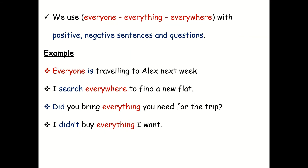And we use everyone, everything, everywhere with positive and negative sentences and questions. Example: Everyone is travelling to Alex next week. I searched everywhere to find a new flat. Did you bring everything you need for the trip?